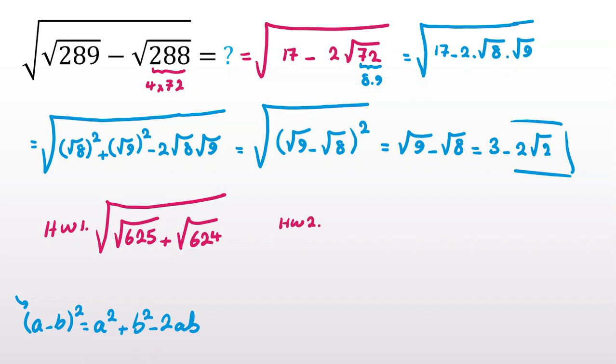As homework number 2, try to solve this one: square root of (625 × 626 × 627 × 628 + 1). Try to calculate the square root of this number.